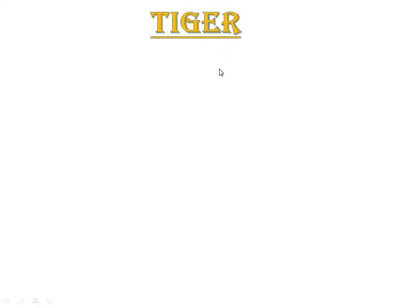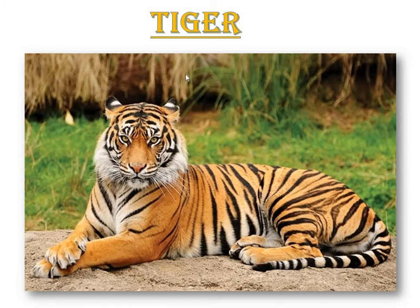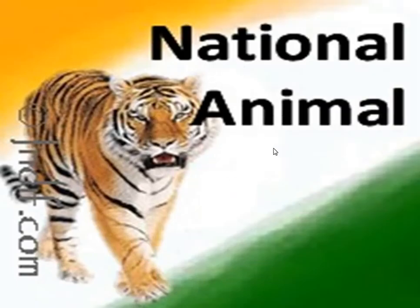First comes the tiger. T-I-G-E-R. Tiger. Look how tigers look like. It is a very strong animal and it has yellow and black stripes on its body. This tiger is the national animal of India.